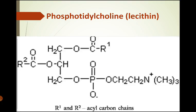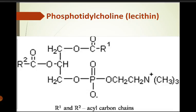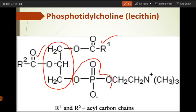The structural formula of phosphatidylcholine is given here. The central glycerol molecule is attached to the first fatty acid, the second fatty acid, and the phosphate group. The nitrogenous base added here is choline. This choline nitrogenous base is linked to the phosphoric acid in the structure.